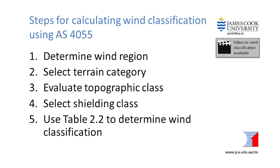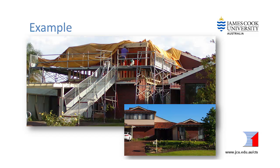Another video in this series outlines in detail the steps used in AS4055 to obtain the wind classification for houses. This video shows an example of how they are used. A wind classification is required for every new house or major building work on an existing house. This example shows how to evaluate the wind classification for an existing house prior to an extension. The extended house fits within the limitations on size and shape in AS4055.